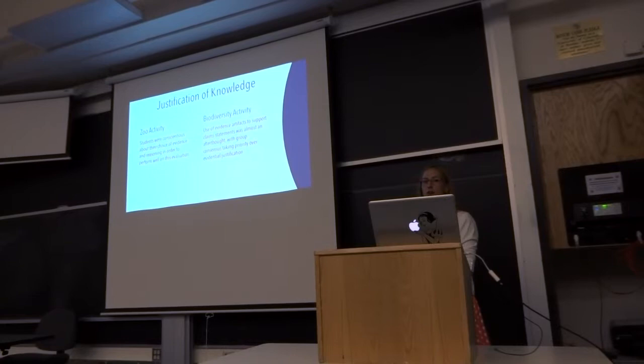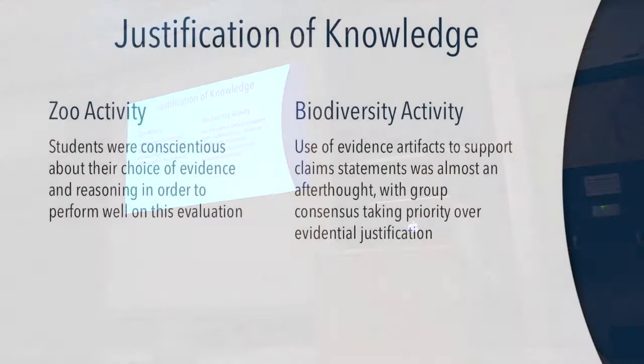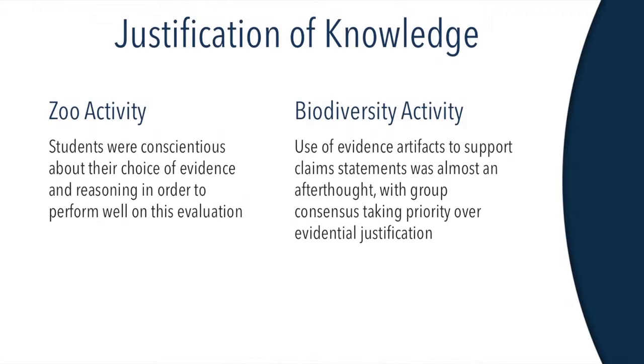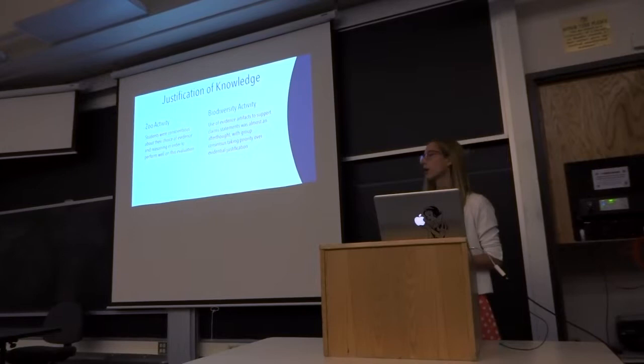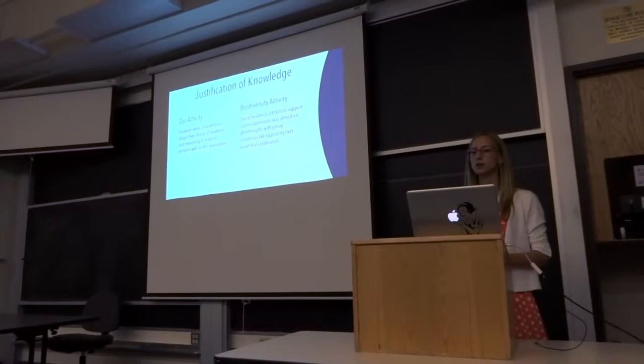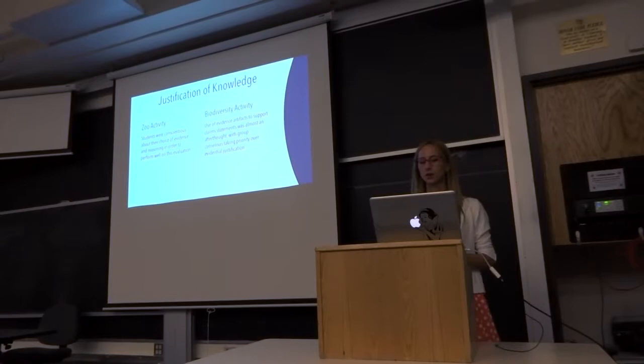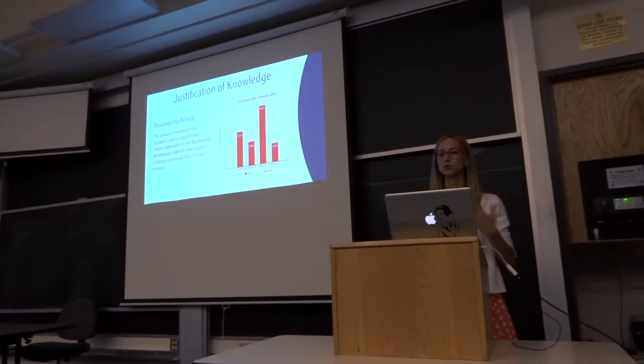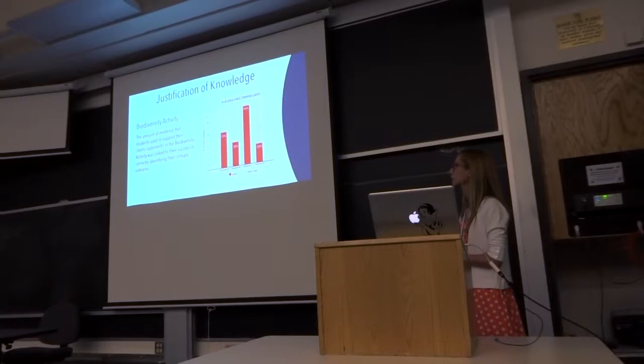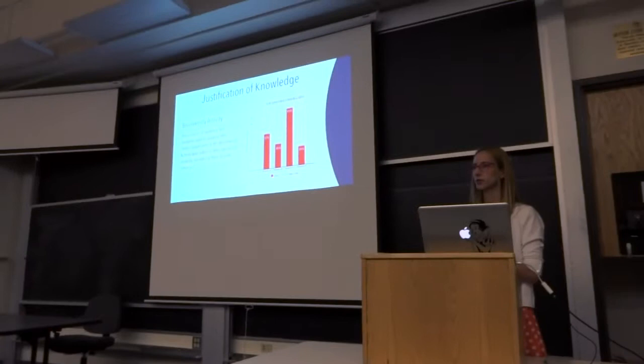With respect to the justification of knowledge, there is an interesting observation that students in the zoo activity, completed individually, were very conscientious about their choice of evidence artifacts in support of their claims statement. Students wanted to really perform well on this evaluation, so they were very careful about choosing which evidence they would use to support their claims. However, in the biodiversity activity, the use of evidence artifacts to support their claims statement was almost an afterthought. Here, students favored consensus or agreeableness within the group over evidential justification. A lot of these negotiations came down to either a group vote or students just wanted to appease the other group members in their group. Interestingly, another finding was that the amount of evidence that students used to support their claims statement in the biodiversity activity was linked to their success in correctly identifying their climatic scenarios.